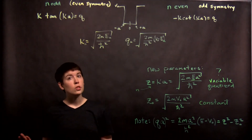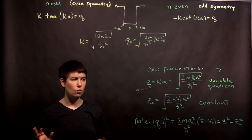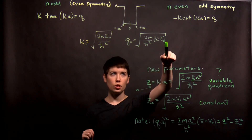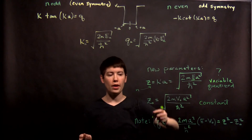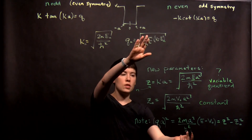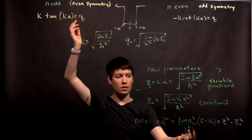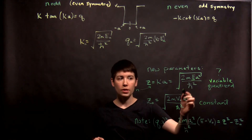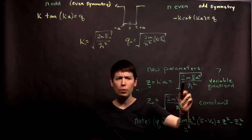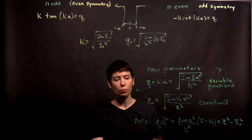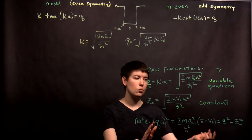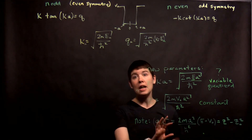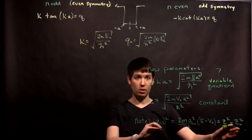One last thing to note, which the book uses but doesn't explain quite clearly: QA squared, if we write it out — remember what Q is — when we square Q the square root goes away, and multiplying by A squared gives this expression. I now have the term E minus V naught out front. Looking at Z and Z naught — here's an E, here's a V naught — if we square both of them, that term pops out. So QA squared is equivalent to Z squared minus Z naught squared. This means QA is not an independent parameter; it can be re-expressed in terms of Z and Z naught.